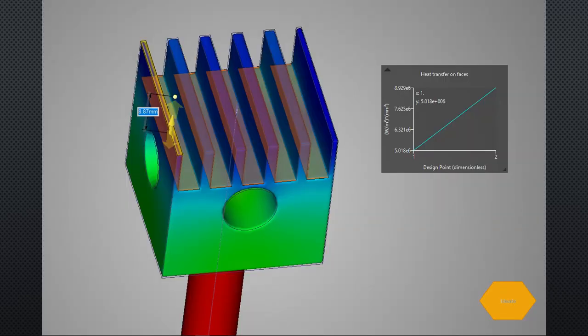After this, when students make adjustments to their geometry, they will be able to see how each design change either increases or decreases the heat transfer. In this example, I made the valleys between the fins a little deeper, which increased the heat transfer significantly.